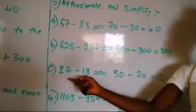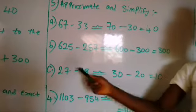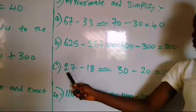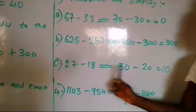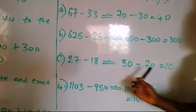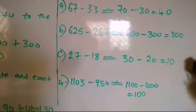Now we have the next figure which is 27 minus 18. So approximate this. You round this 7 up to 1 and put it in the 2, so we are left with 30. You bring a minus sign and round this 8 up to 1, putting it in the 1, making it 20. So we have 30 minus 20 gives us 10.